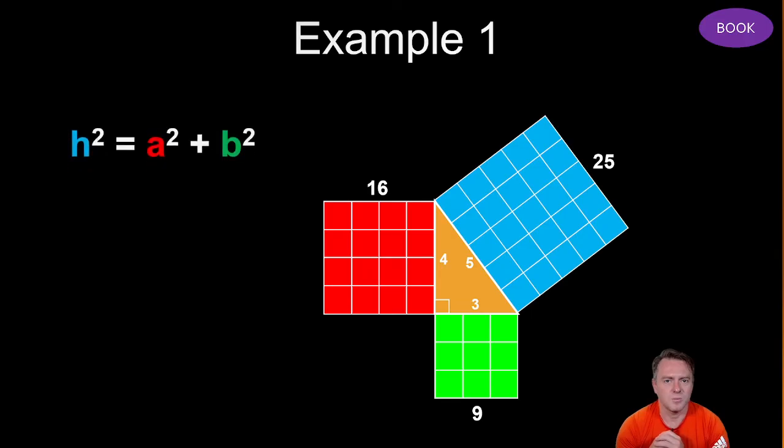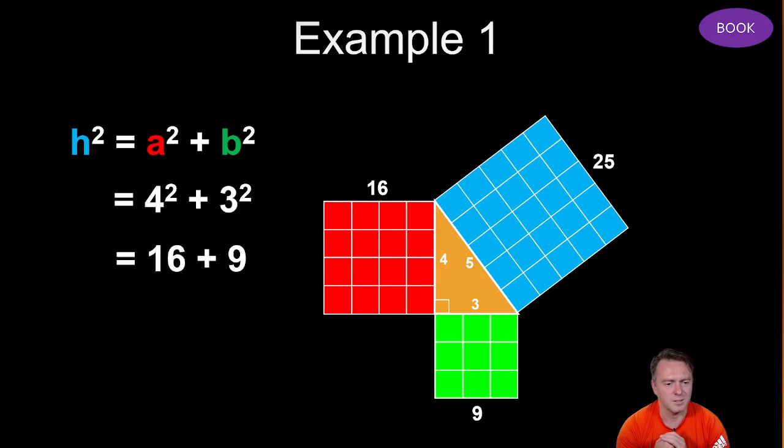So then we could put into the rule just to see if this actually sort of balances out as well. So h we can put in is five. We can then put four squared plus three squared and see what happens.